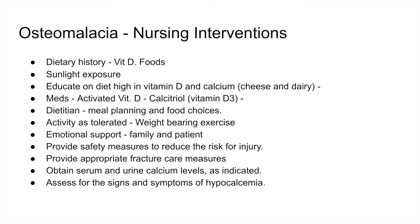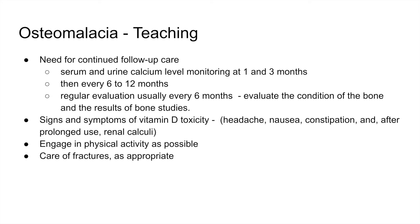Nursing interventions for osteomalacia: educate patients on foods high in vitamin D and increasing sunlight exposure. If the patient has liver or kidney disease, administer the activated form of vitamin D as calcitriol. Get a dietitian consult to help plan meals. Increase weight-bearing exercises and activity as tolerated. Provide emotional support and safety from injury. Provide fracture care as needed. Obtain serum and urine calcium levels as indicated. Assess for signs of hypocalcemia and vitamin D toxicity, especially if receiving vitamin D. With long-term vitamin D use, monitor for renal calculi.